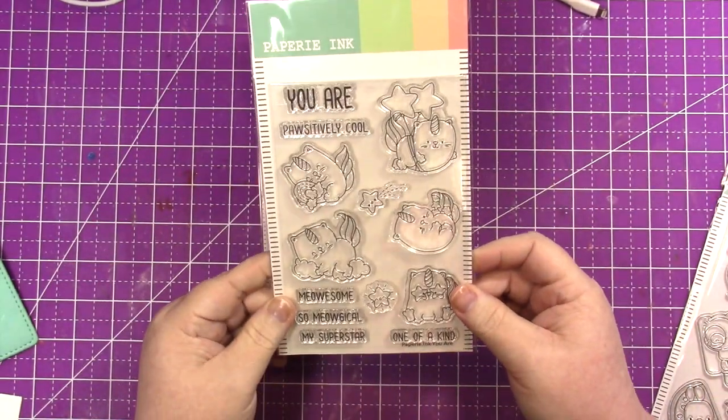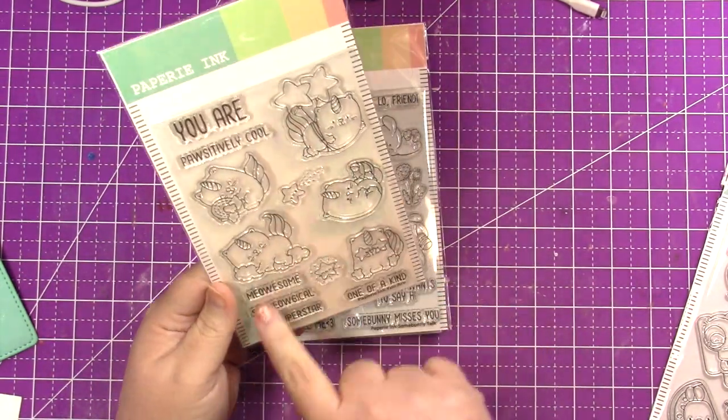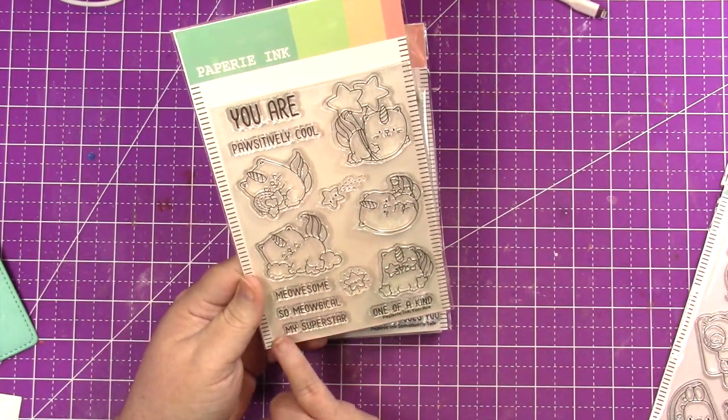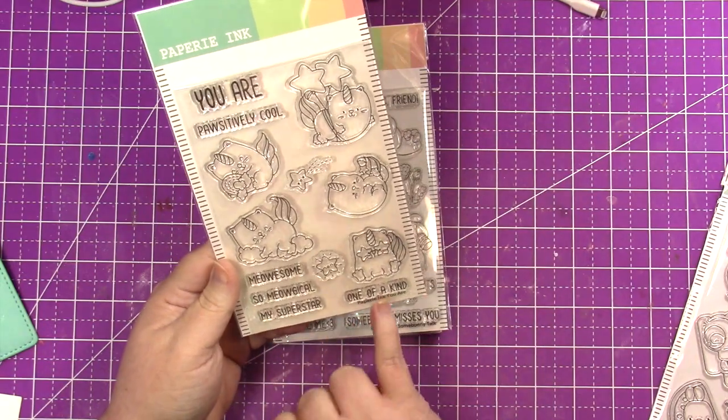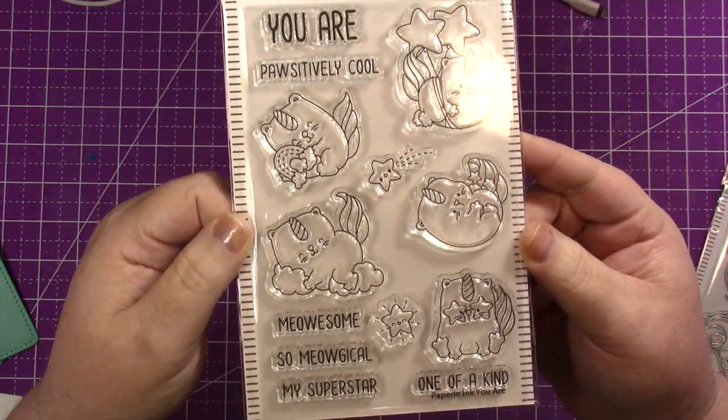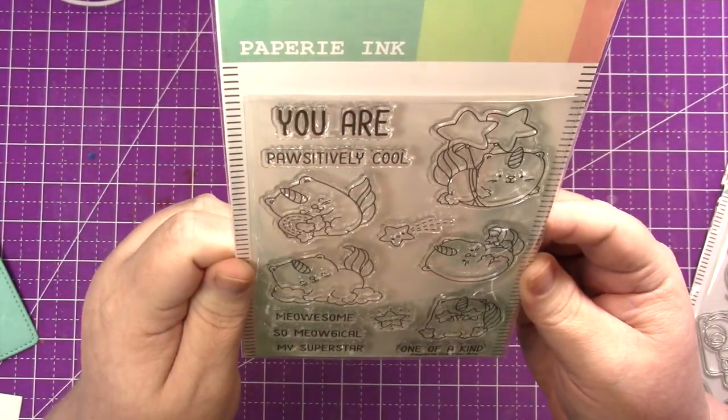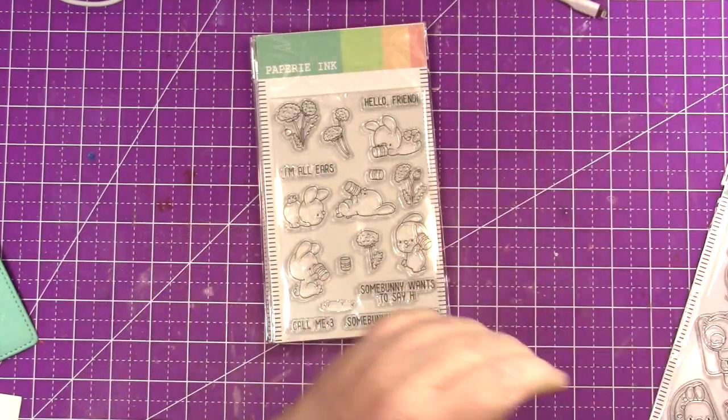Next we have You Are So. This is one of the new releases. So you are positively cool, meow-some, so meow-gical, my superstar, one of a kind. And they are caticorns, so a cat unicorn. So cute. Love. Their illustrations are just so adorable, seriously.